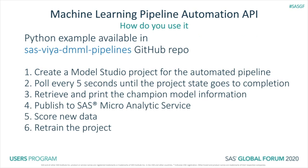You can find an end-to-end example in Python to automatically generate pipelines using this REST API in the example1.py file in the SAS Viya DMML Pipelines GitHub repository for SAS software. Other languages or REST clients can also be used in place of Python. In the example code, there is setup for the parameters, then the code includes the request methods to carry out the following steps.